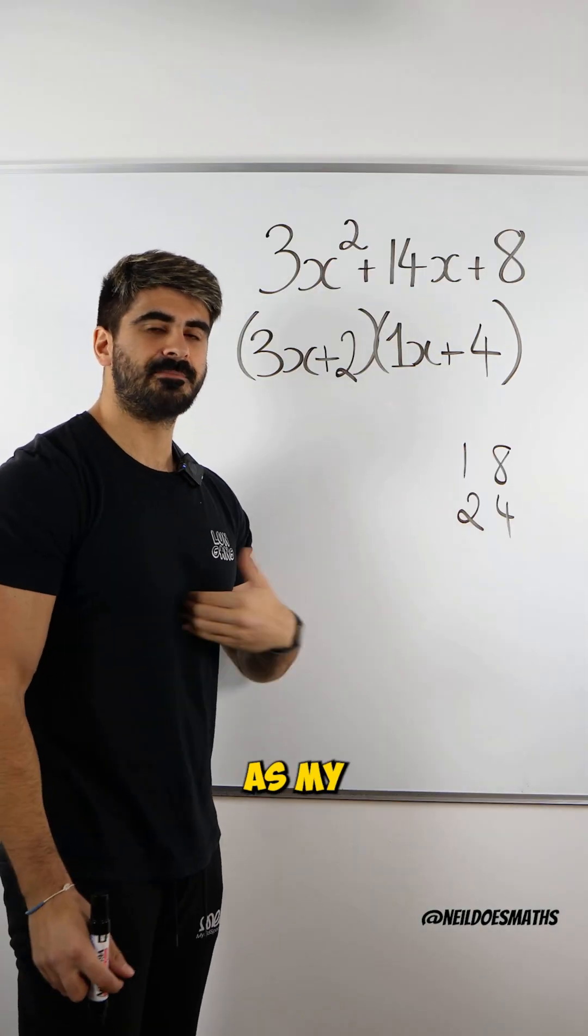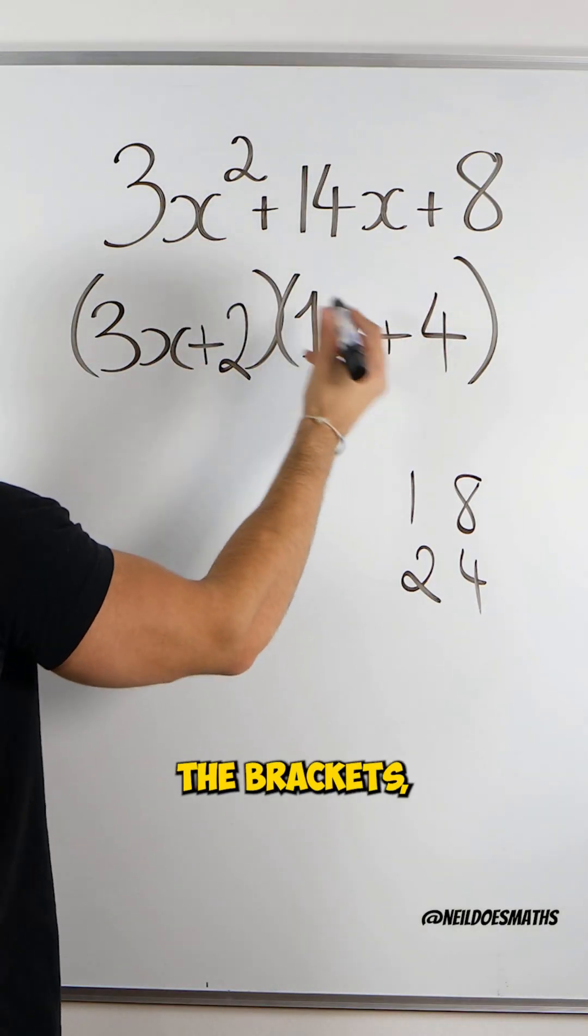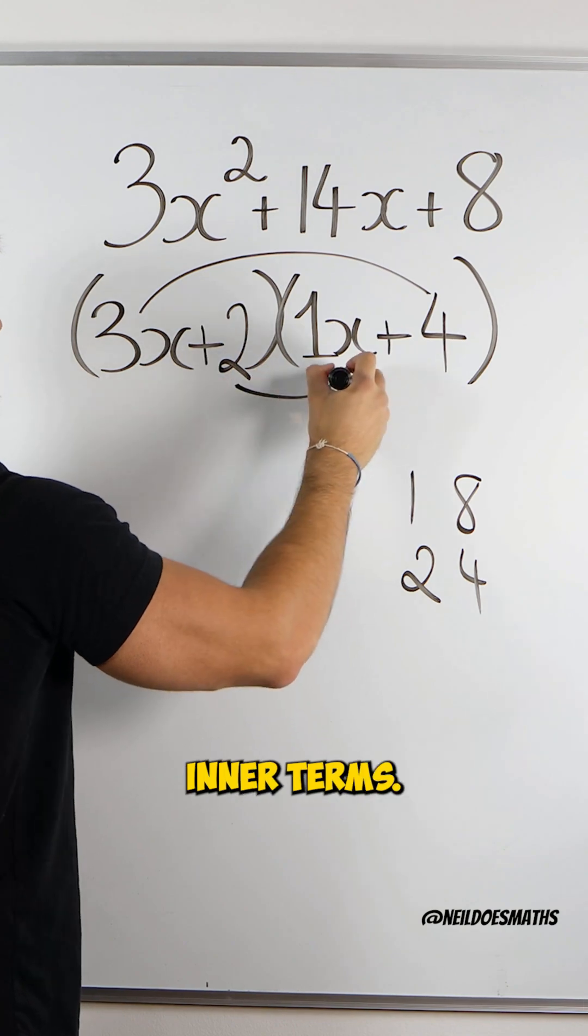Now, this is known as my oi-oi method. Oi-oi, meaning when we multiply out the brackets, we're only going to focus on the outer and the inner terms.